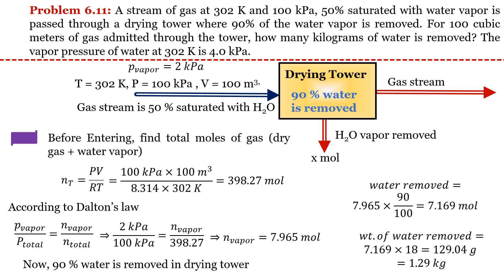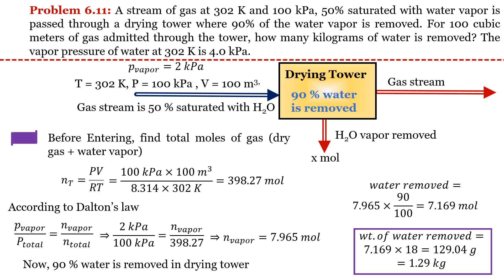We estimate the weight of water removed by multiplying the moles by the molecular weight of water. Finally, the weight of water removed equals 1.29 kg.